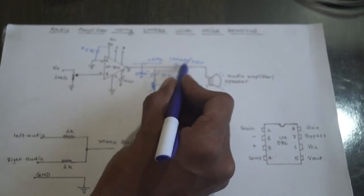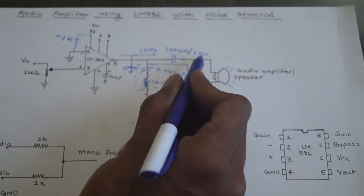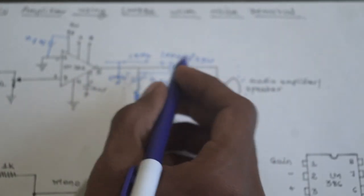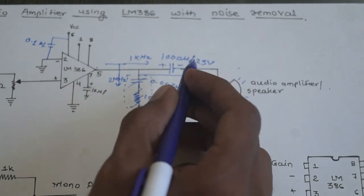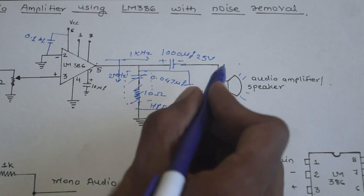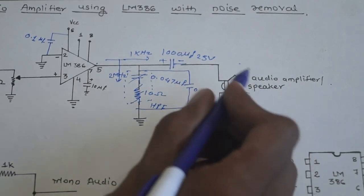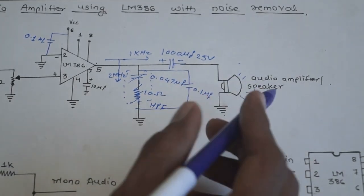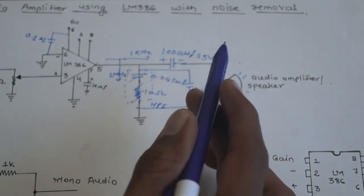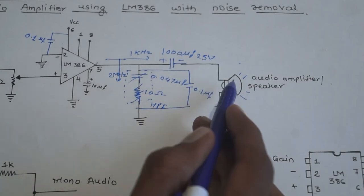I use a 1000 microfarad, 25-volt electrolytic capacitor, or higher, for removing DC offset. This means no DC voltage passes into the speaker, which would cause damage. The capacitor prevents this and provides wide bass response.